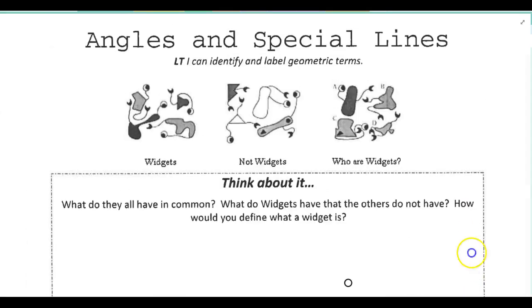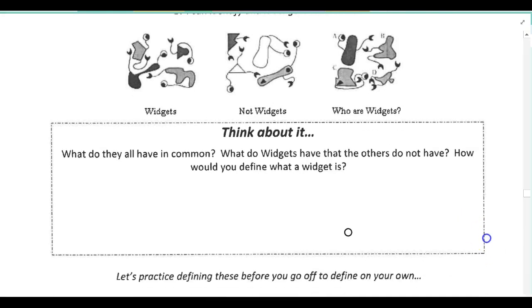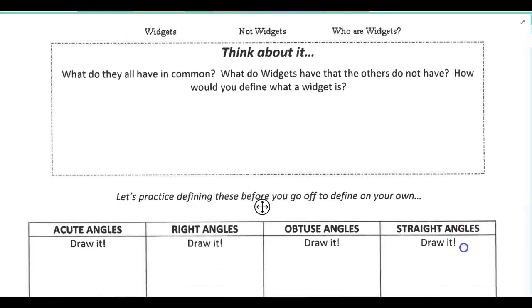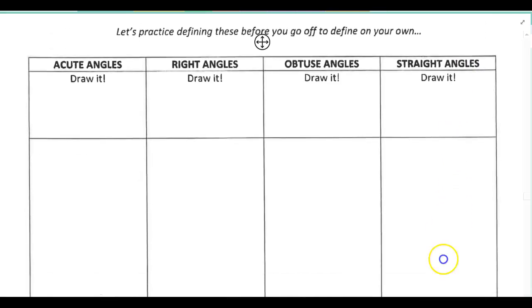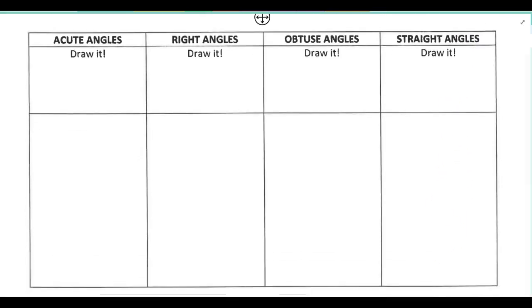So this first part here, talking about widgets, we'll talk about this in class, but if you want to take a peek at that, feel free. And then this next part here, we're going to talk about different angles, and hopefully three of these you know for sure. The first one here, we have an acute angle, so let's just draw an example of an acute angle.